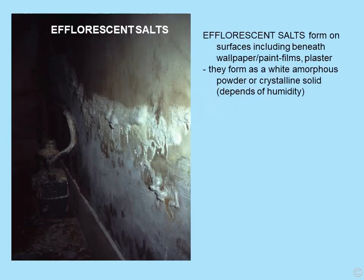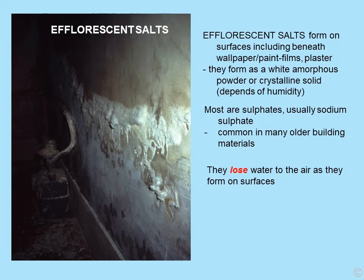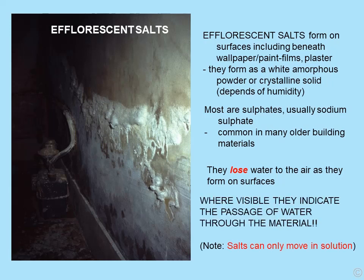Efflorescent salts form on surfaces, including beneath wallpaper, paint films, and plaster. They can literally blow off as they form, appearing as a white amorphous powder or a crystalline solid. Whether they form as a powder or solid depends on the surrounding humidity. Most are sulfates — usually sodium sulfate, but one can also get magnesium sulfate. They are common in many older building materials, and they lose water to the air as they form on surfaces, indicating the passage of water through the material.